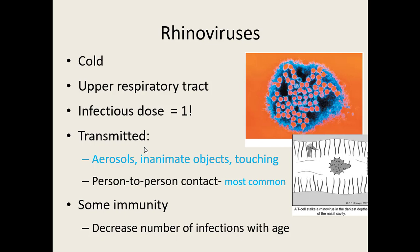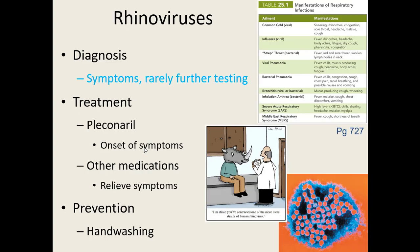To diagnose rhinoviruses, clinicians usually go by symptoms since most people don't go to the doctor for a cold. At early onset, antivirals like pleconaril can shorten the illness. Otherwise, treatment is just symptom relief — pain medications, congestion medications. The best prevention is hand washing. No vaccine is being developed because there are over 150 strains that don't share common antigens and constantly mutate.